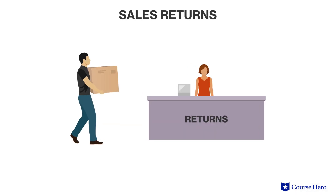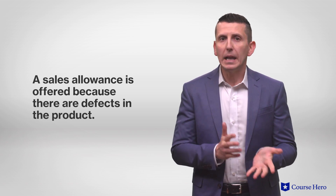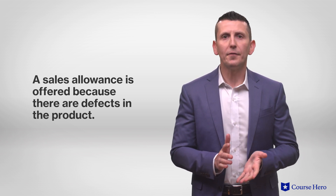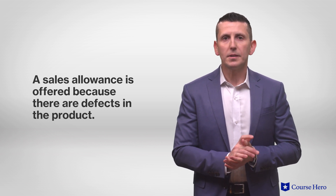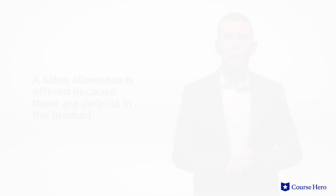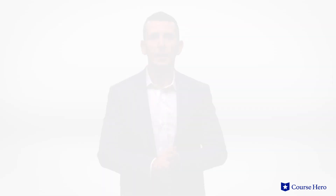Sales returns occur when a customer returns merchandise. A sales allowance is similar to a discount, but unlike a discount, it is not offered because the business desires to increase sales, but because there are defects in the product. For example, a sales allowance would occur if a customer receives a 20% discount for having purchased a piece of furniture on display in the warehouse. Sales net of returns and allowances yields net sales.